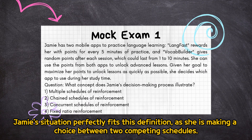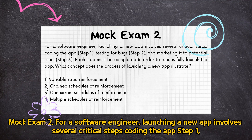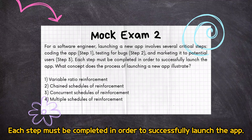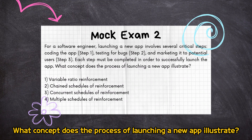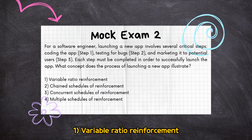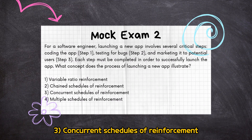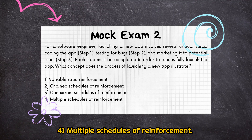Mock Exam 2: for a software engineer, launching a new app involves several critical steps — coding the app (Step 1), testing for bugs (Step 2), and marketing it to potential users (Step 3). Each step must be completed in order to successfully launch the app. What concept does the process of launching a new app illustrate? (1) Variable ratio reinforcement, (2) Chain schedules of reinforcement, (3) Concurrent schedules of reinforcement, (4) Multiple schedules of reinforcement.